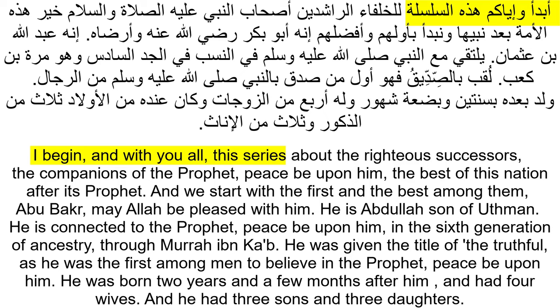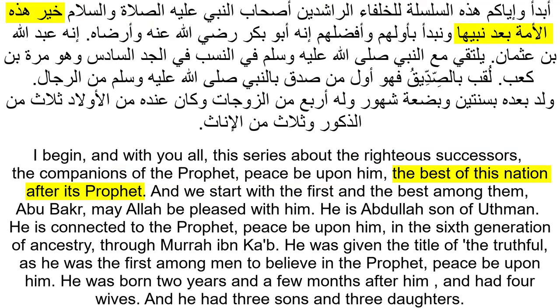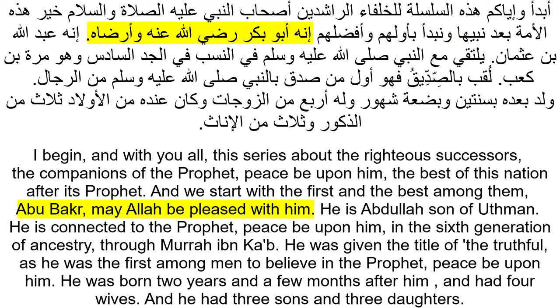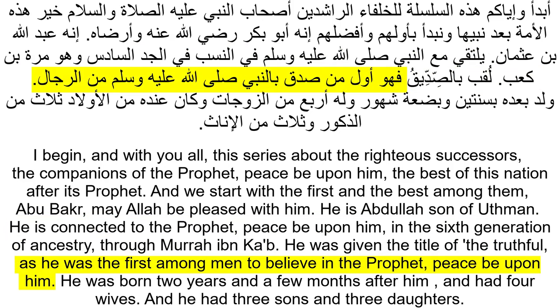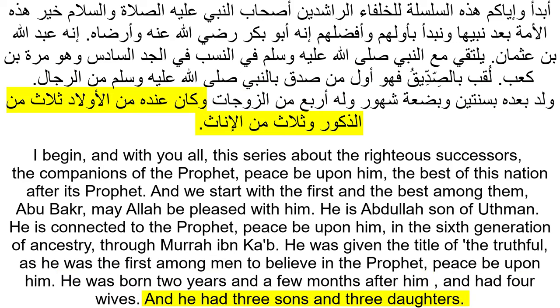Okay, time to recap. We are going to use all the nouns, verbs, and examples we have seen to understand the full clip: أبدأوا وإياكم هذه السلسلة للخلفاء الراشدين أصحاب النبي عليه الصلاة والسلام، خير هذه الأمة بعد نبيها، ونبدأ بأولهم وأفضلهم، إنه أبو بكر رضي الله عنه وأرضاه. إنه عبد الله بن عثمان، يلتقي مع النبي صلى الله عليه وسلم في النسب في الجد السادس وهو مرة بن كعب. لقب بالصديق فهو أول من صدق بالنبي صلى الله عليه وسلم من الرجال. ولد بعده بسنتين وبضعة شهور، وله أربع من الزوجات، وكان عنده من الأولاد ثلاث من الذكور وثلاث من الإناث.